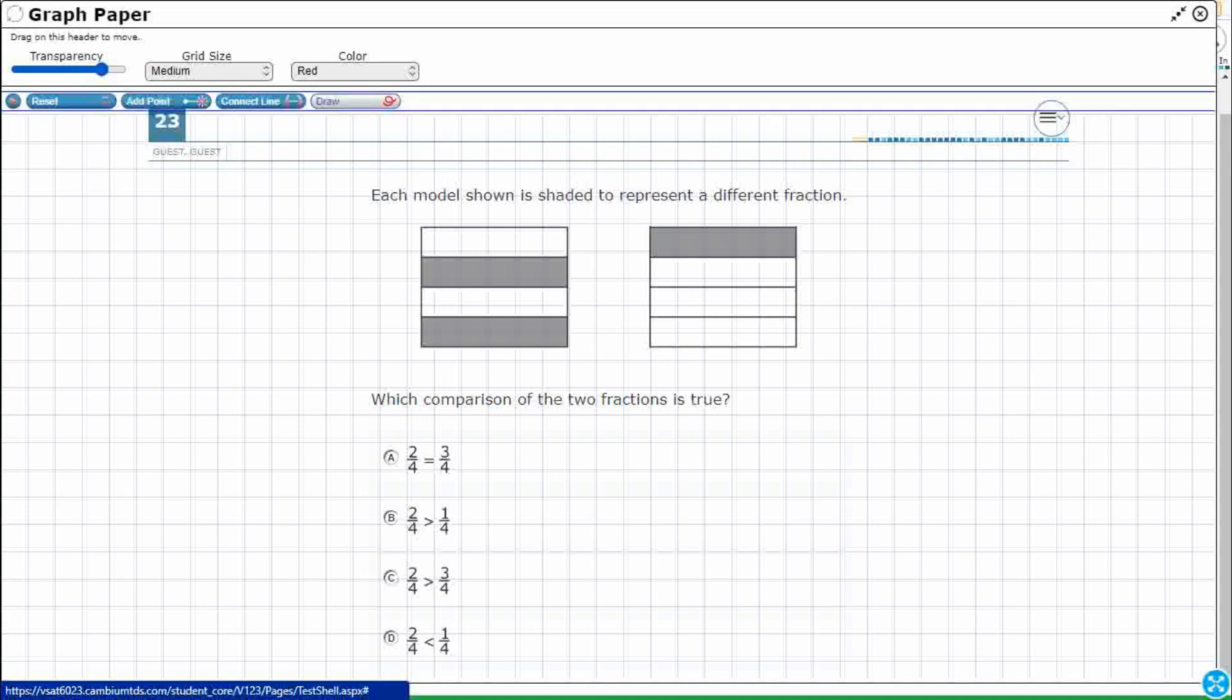And so first let's label these fractions. So when we're dealing with fractions, there's a top number and a bottom number. So the top number is the numerator, and that top number always represents the number of pieces that are selected or the number of pieces that we are talking about. In this particular problem, they're shaded.